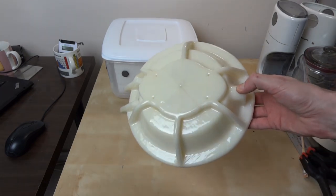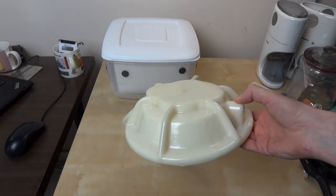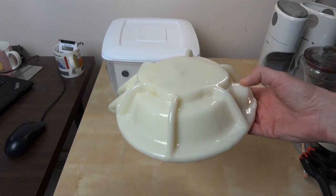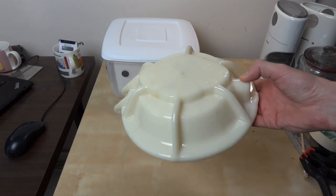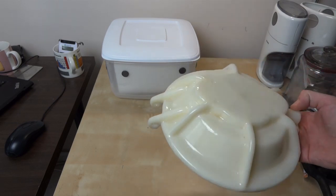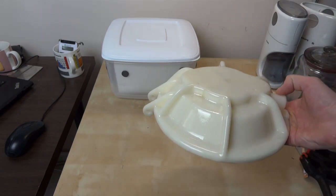The normal process for acetone vapor bath smoothing would be to put the piece in a metal or glass container and boil acetone by having a heat source underneath, and the vapor eats away the piece and smooths it out. So I decided to try another method which I'd heard about, which was doing it cold.